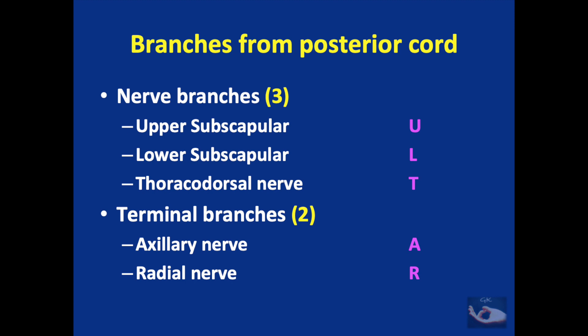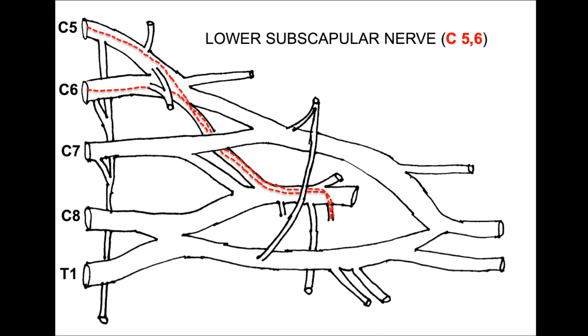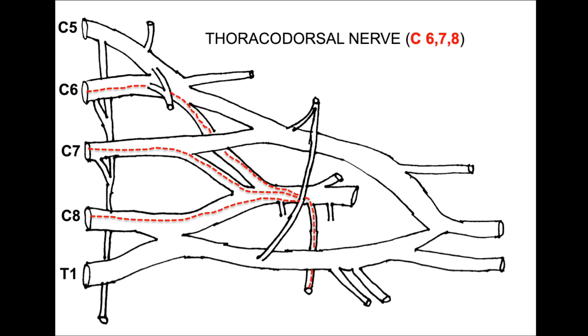From the posterior cord there are three nerve branches — the upper subscapular, lower subscapular, and thoracodorsal nerve — and two terminal branches: the axillary nerve and the radial nerve. The mnemonic is ULTAR ('the altar'). The upper subscapular nerve is a motor nerve from C5 and C6, supplying the subscapularis. The lower subscapular nerve is also motor from C5 and C6, supplying subscapularis and teres major, which adducts, internally rotates, protracts, and depresses the scapula. The thoracodorsal nerve (nerve to latissimus dorsi) is a pure motor nerve with fibers from C6, C7, and C8.